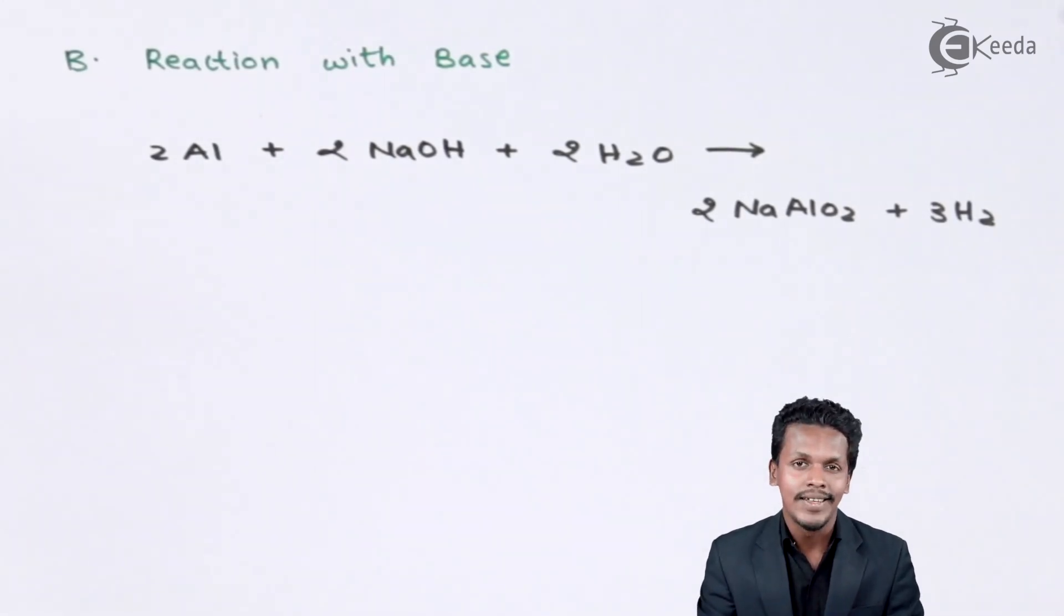Basically we can also extract aluminium from different ores and that is the main ingredient from where we can obtain aluminium. So this is what I want to talk about.